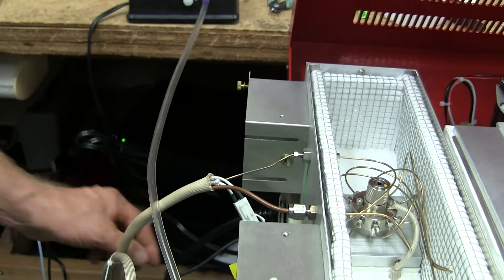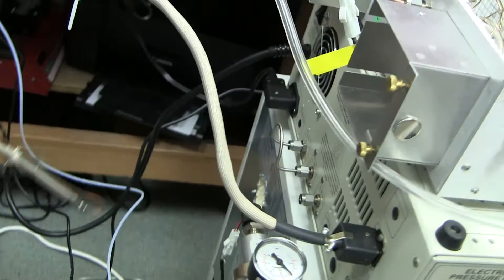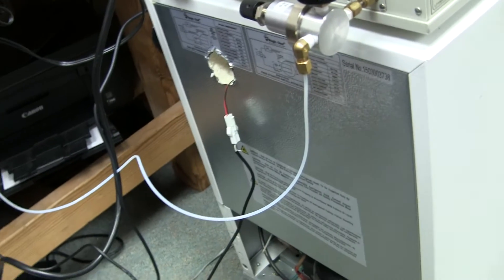The way that we have this trap arranged is that it's inside the freezer compartment of this dormitory refrigerator. So, here is the trap.